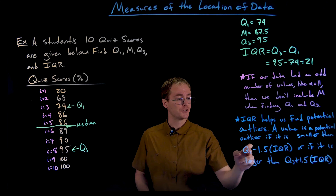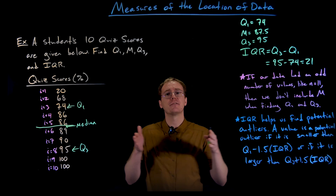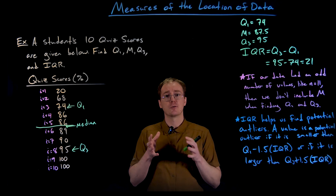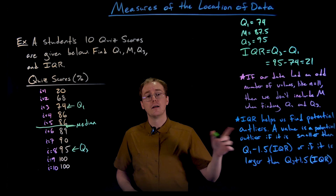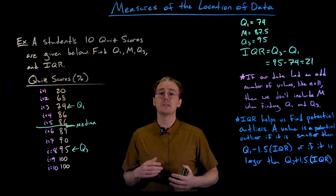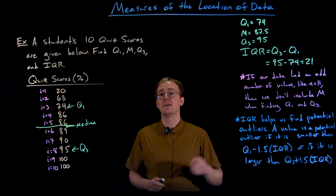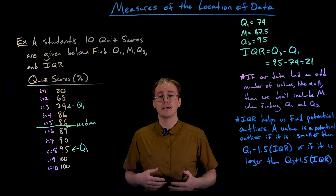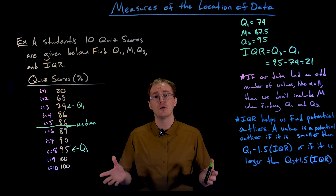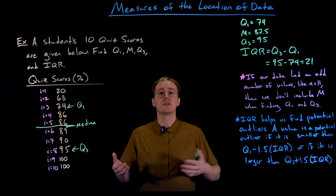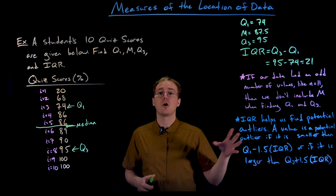By taking the first and third quartiles and subtracting or adding a multiple of the IQR, we step outside that central 50% of data. If the step is too large, we may be working with a potential outlier. A key word here is 'potential' — we need more context to actually identify something as an outlier. Maybe that data value is far away because of a misrecording or instrument malfunction, or maybe it's an important value like a high-priced home or a low-salaried employee, in which case it may still be appropriate to include it.